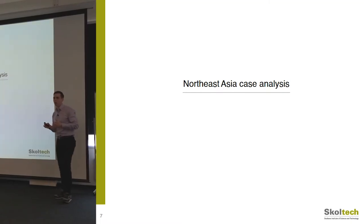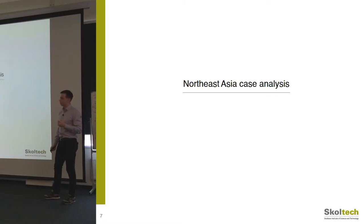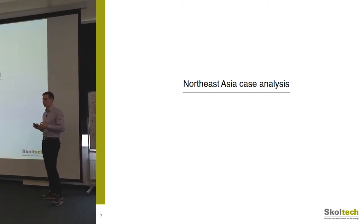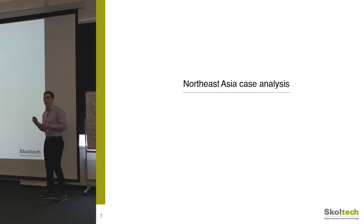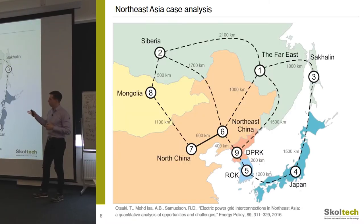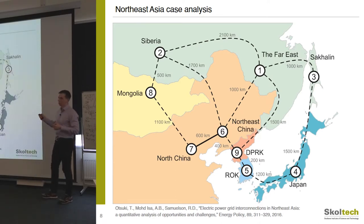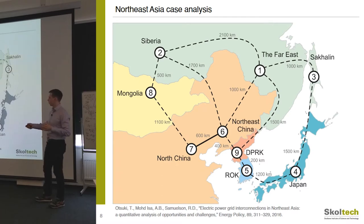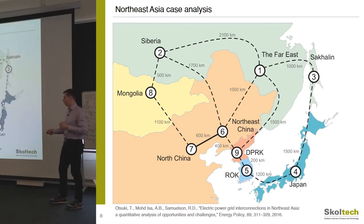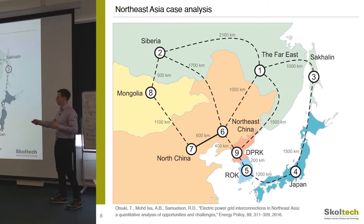Now let's go to the Northeast Asia case study — the main case I study in my thesis, also often called the Asian super grid in the media. We study six countries: Russia, Mongolia, China, North and South Korea, and Japan. We gathered a lot of information from papers, technical reports, and engineering judgment. The closest reference study was done in 2016 by Takashi Atsuki, who also wrote a paper in Energy Policy about interconnections in Northeast Asia.